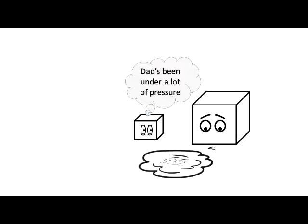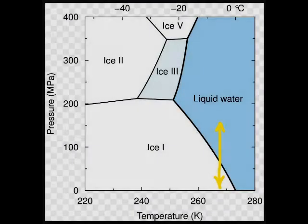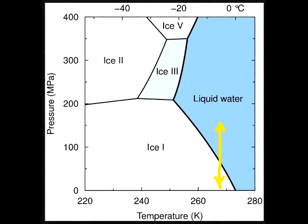This liquid to solid transition can happen without the need for heat transfer. Just by moving up and down on the arrow we can make water go solid to liquid and liquid to solid without heating or cooling. The arrow on this thermodynamic phase diagram shows what we are doing.